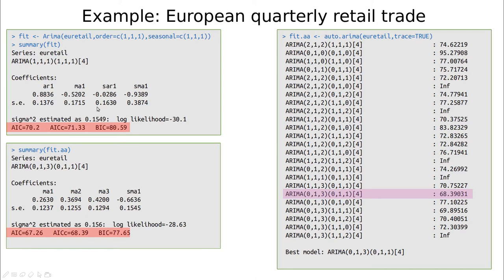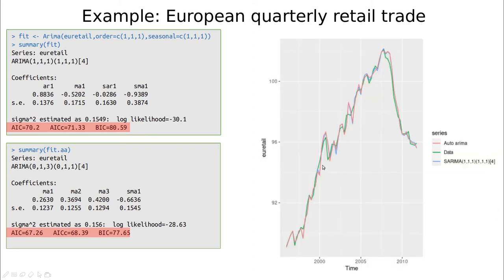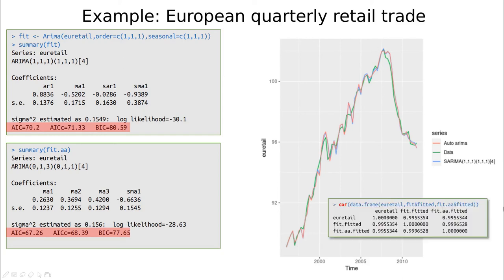Maybe a better model would be ARIMA(1,1,1)(0,1,1), which is probably one of the ones to explore. In the end, the differences are not that large, and you can trust your eyes: the data and both methods are more or less capturing the series well. Taking a look at the correlations, they are almost identical for the manually fitted model and the auto.arima model, so you can be confident this model is as good. If we want to improve the fit, we would drop the non-significant coefficient, giving us a model with one fewer parameter.